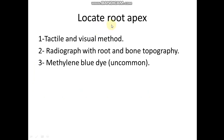There are three methods to locate the root apex. We can do an osteotomy procedure — osteotomy means bone removal. Locating the root apex could be by tactile and visual methods. This depends on the condition of the buccal cortical plate. If the buccal cortical plate is destructed due to periapical pathosis — resorption and destruction of the buccal cortical plate — it can be seen after flap reflection and it is very easy to locate the root.